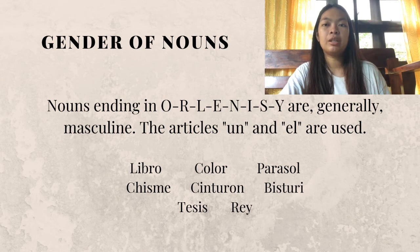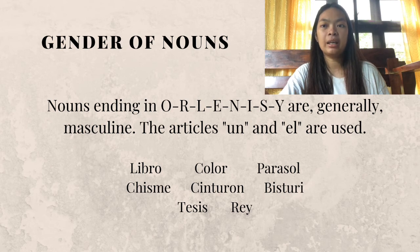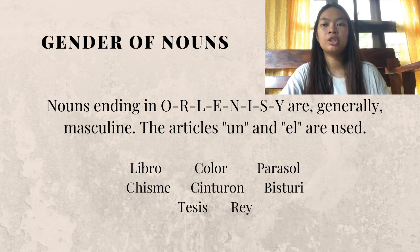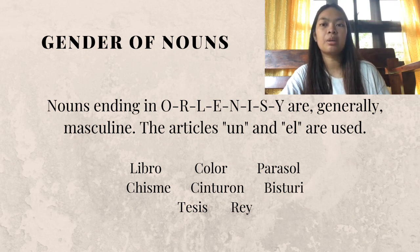On the other hand, nouns ending in O, R, L, E, N, I, S, and Y are generally masculine, and the articles un and el are used. Libro, Color, Parasol, Chisme, Cinturon, Bisturi, Thesis, and Rey are some examples of masculine nouns.